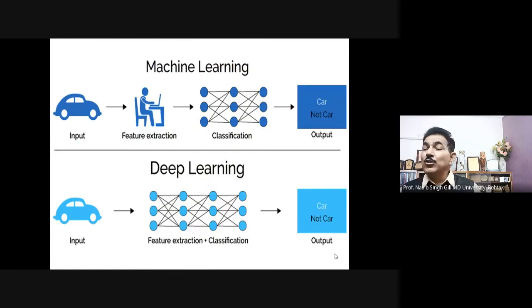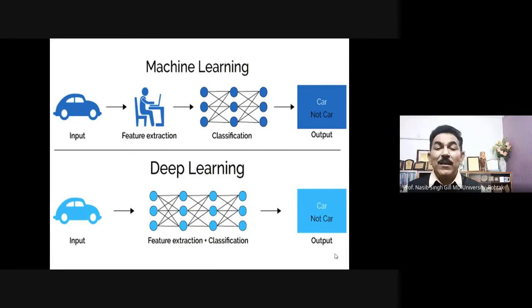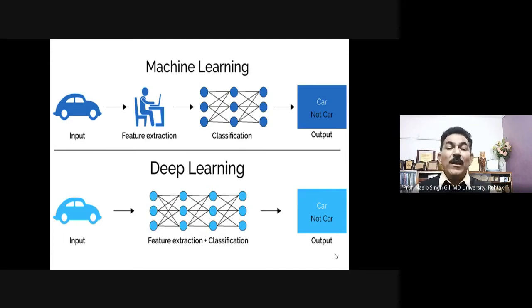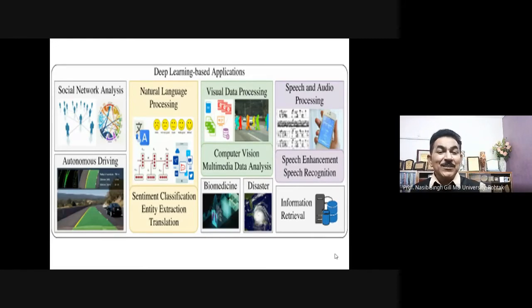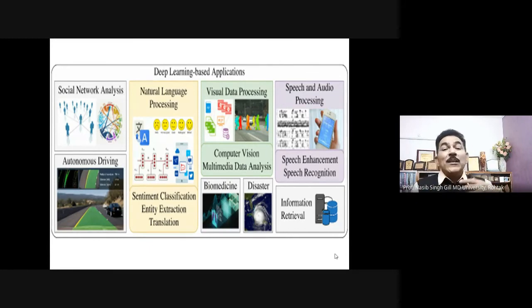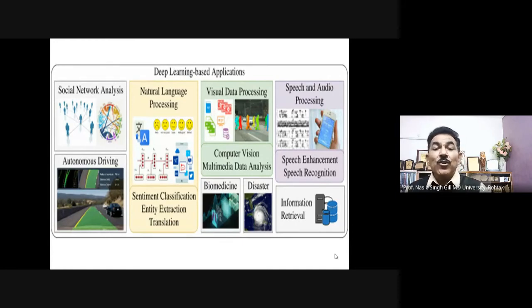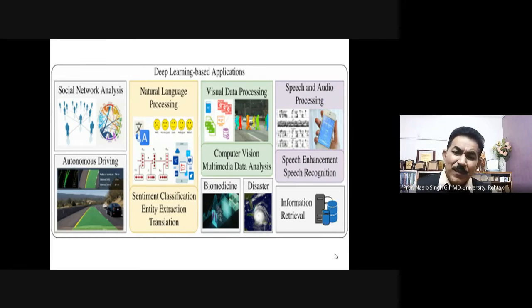There is a key difference between machine learning and deep learning — the kind of action taken, feature extraction, and classification in machine learning versus deep learning. Applications where deep learning is helping society today include: social network analysis, autonomous driving, natural language processing, sentiment classification, entity extraction and translation, visual data processing, computer vision, multimedia and data analysis, domain-specific applications in bio-dimension and disaster management.